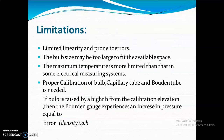The limitations include limited linearity. The bulb size may be too large to fit the available space. Proper calibration is required. If the bulb rises in height from the calibration elevation, then the Boudin gauge experiences increasing pressure equal to error rho g h.